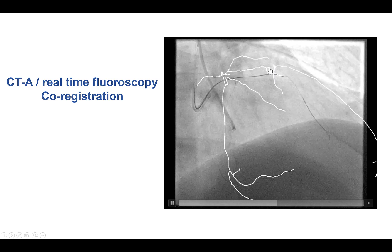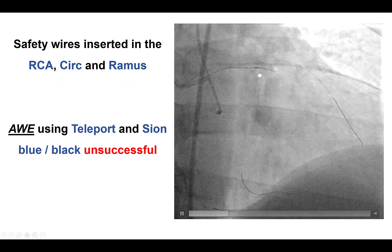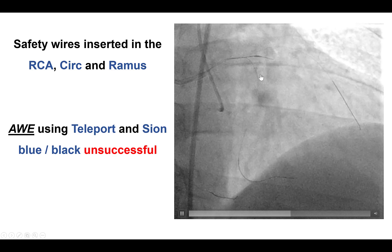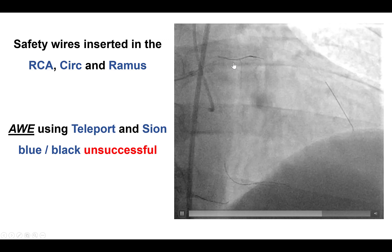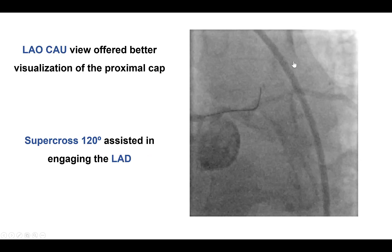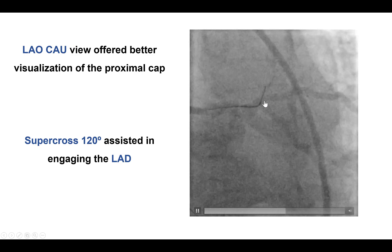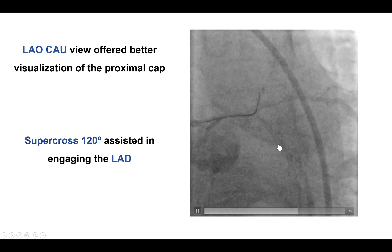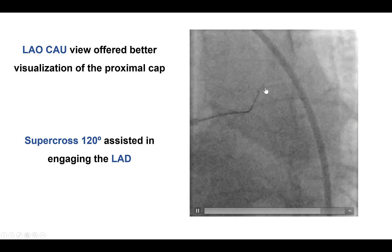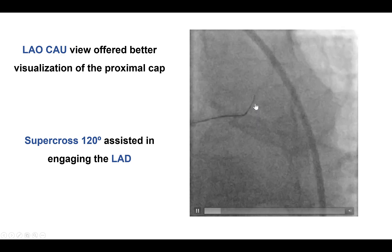We tried wiring under the guidance of the co-registration but had challenging entry into the vessel. Given the ostial location of the LAD CTO, we placed safety wires in both the ramus as well as the circumflex. Despite using various kite wires, we were unsuccessful in entering the CTO. What made the difference was using the LAO caudal view — the spider view. Here we can see the ramus taking off, the circumflex taking off, and a slight filling into the proximal cap.